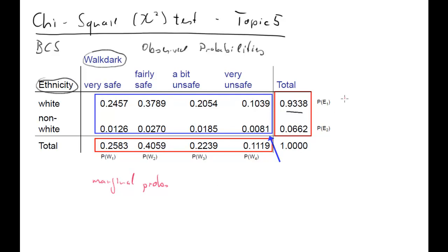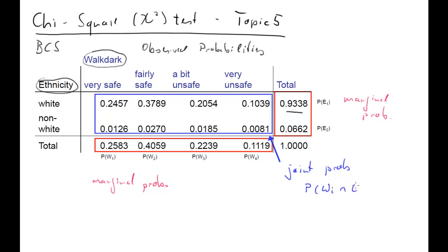Then we have a second marginal probability for the ethnicity random variable. We have two outcomes, E1 and E2. E1 is white - about 93.5% probability to be white for a randomly drawn member of the survey, and 6.5% to be non-white. The blue probabilities in the middle were the joint probabilities - the probability of having a particular outcome for walk-dark and a particular outcome for ethnicity.